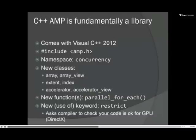The barrier to entry is really low. You include this header, amp.h, and there's a namespace concurrency with a lowercase c. The Parallel Patterns Library, PPL, is also in the concurrency namespace. Prior to Visual Studio 2012, concurrency was spelled with a capital C for PPL; they're now using lowercase c. If you're new to this universe, start using a lowercase c from the beginning. You do need Visual Studio 2012 — you can't use it in 2010 — because in addition to the library, there are also a few little language tweaks.